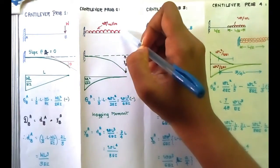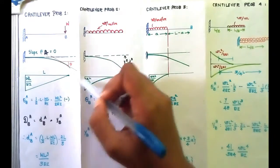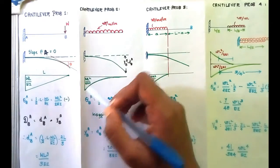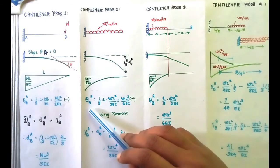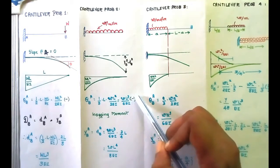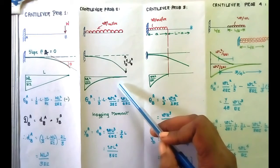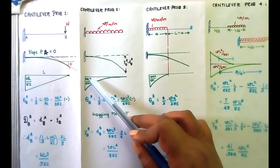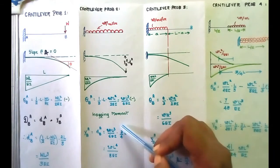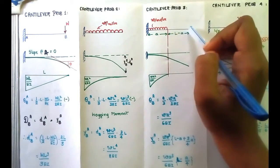The next problem involves a complete UDL on the cantilever. The reference tangent and horizontal axis remain the same. The only difference is the M by EI diagram — the bending moment diagram is now of the shape of a spandrel. Theta is calculated as the area between A and B: one-third into L into WL squared by 2EI, taken as negative since it is a hogging moment. The deflection is the moment of the spandrel area. The centroidal distance of the spandrel from B is 3 by 4L. Therefore, deflection equals WL cubed by 6EI into 3 by 4L, which gives WL to the power 4 by 8EI.